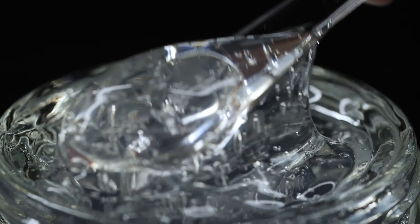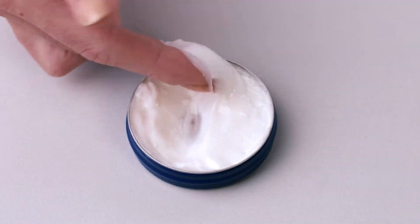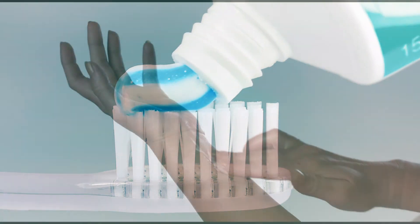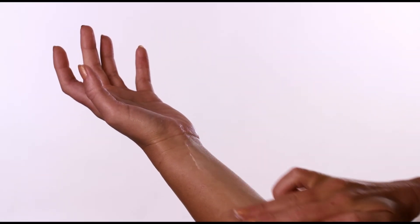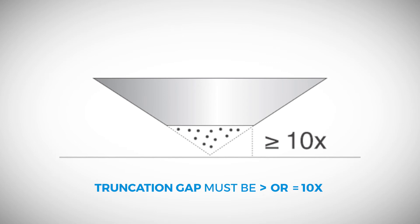A variety of samples may be tested with these geometries including gels, creams, lotions, toothpaste, as well as many others. For samples with particles, the truncation gap for the cone must be greater than or equal to 10 times the particle size. Parallel plates can accommodate larger particles because the gap height may be increased.